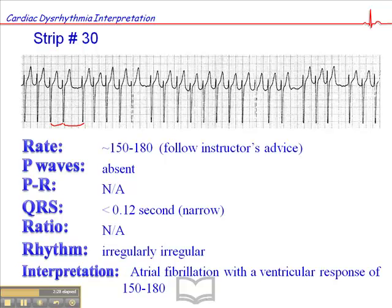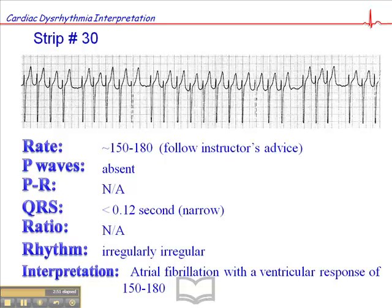But you can do one of two things. Number one, you can take a piece of paper, as I've suggested before, and mark off some R-waves on that paper, and then slide that paper across to see if the R-waves are equidistant. But as you're monitoring the patient, the other thing you can do is turn up the volume on the ECG. And if you cannot see the irregularity on the ECG, you will definitely hear it, because that auditory clue is very, very important.